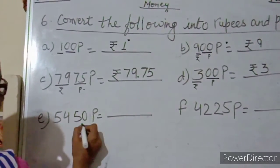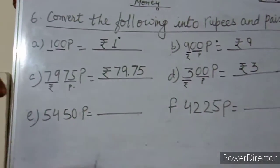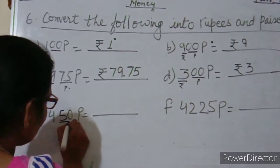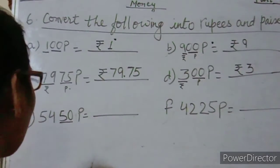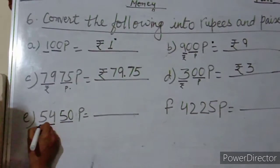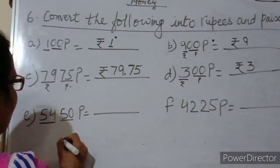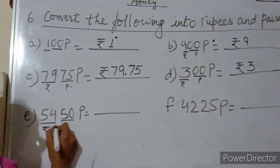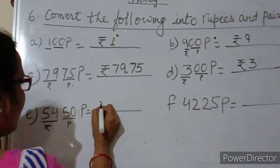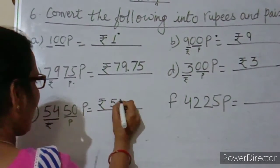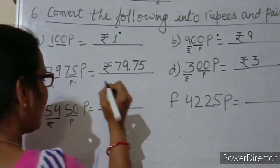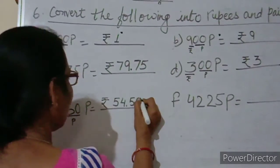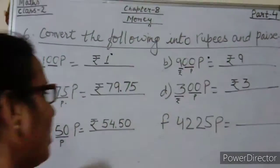Now 5,450 paise. We do the same process — take the two digits from the right as paise, and the rest as rupees. So rupees is 54 and paise is 50. We write 54 rupees, put a dot to separate paise. So 5,450 paise is equal to 54 rupees and 50 paise.